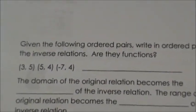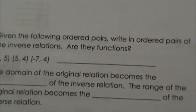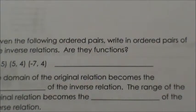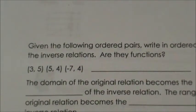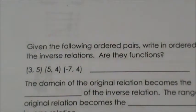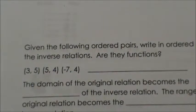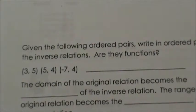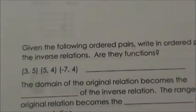Now let's look at the ordered pair concept. Given the ordered pairs (3, 5), (5, 4), and (negative 7, 4), we first ask: is the original set of ordered pairs a function? 3 maps to 5, 5 maps to 4, and negative 7 maps to 4. That is a function because each x has a unique output.